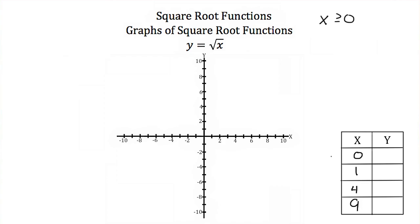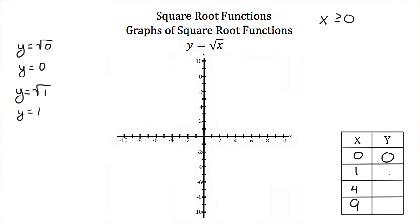Now I'm going to plug each one in and solve for y. If I plug in 0 for x, I get y equals the square root of 0, which is just 0. If I plug in 1, I get y equals the square root of 1, which is just 1. Plugging in 4, I get y equals the square root of 4 — 4 is a perfect square of 2, so y equals 2.